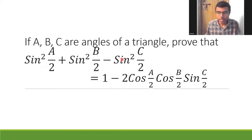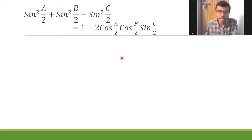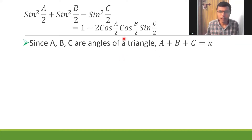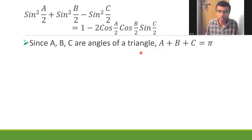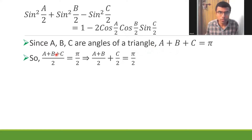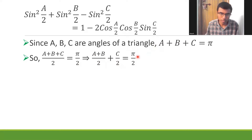Since a, b, c are angles of a triangle, I can write that a + b + c = π. Observing that the question has a/2, b/2, and c/2, I'm going to divide this entire equation by 2 so I can use the given condition in a better way. This gives a/2 + b/2 + c/2 = π/2, which I'll split as: a+b/2 + c/2 = π/2. I'm going to use this condition twice — you'll see when the scenario comes up.